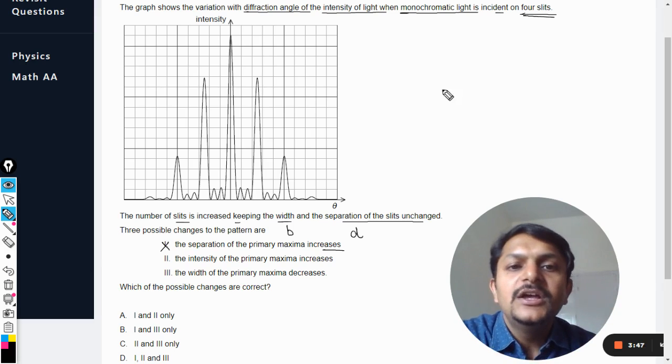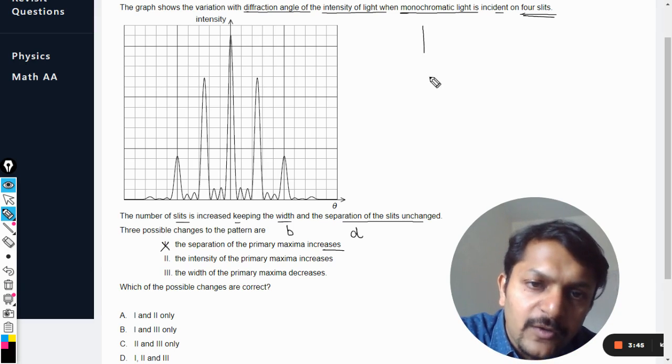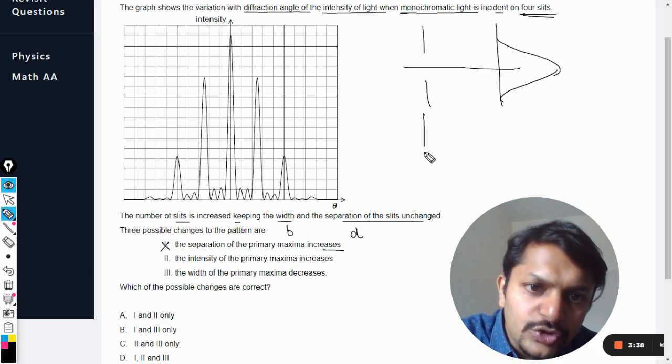So in the case of one single slit there is only diffraction and the pattern looks like this. If there are two slits...